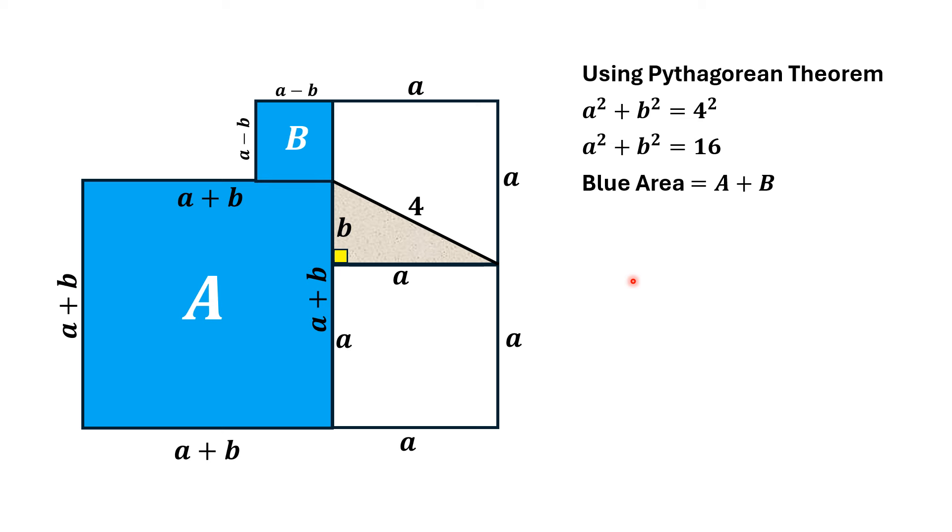Now, the blue area equals the area of this square plus the area of this square. And the area of this square equals A plus B squared, and the area of this square is A minus B squared.